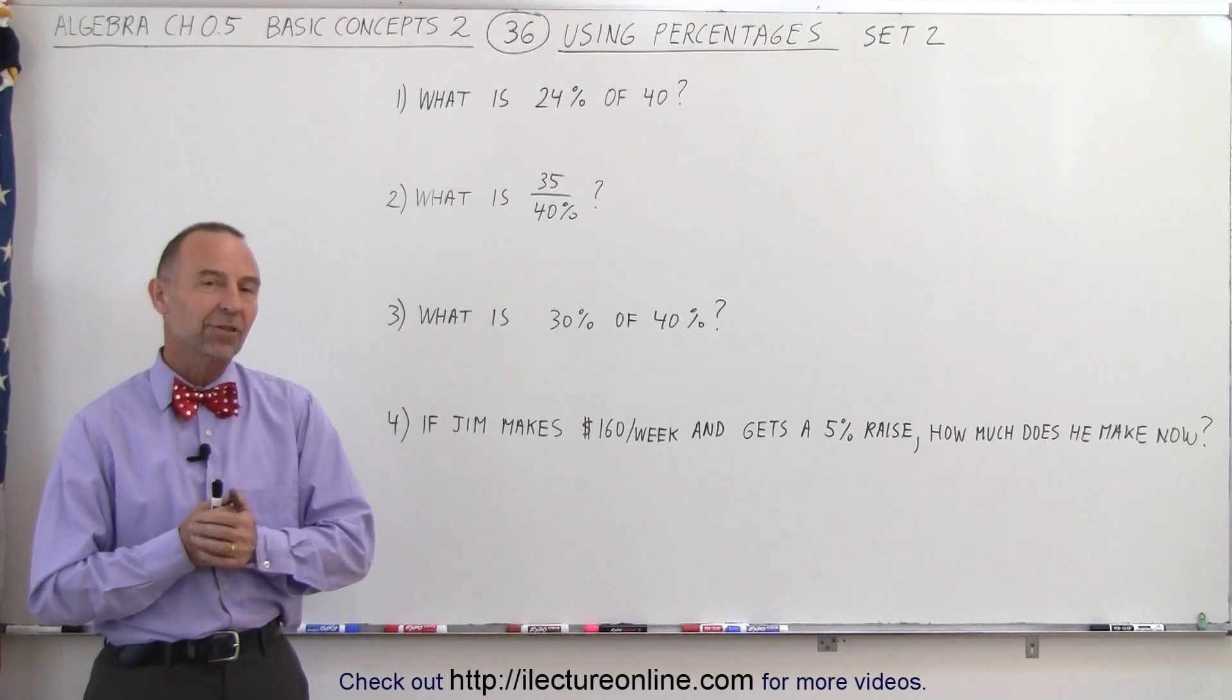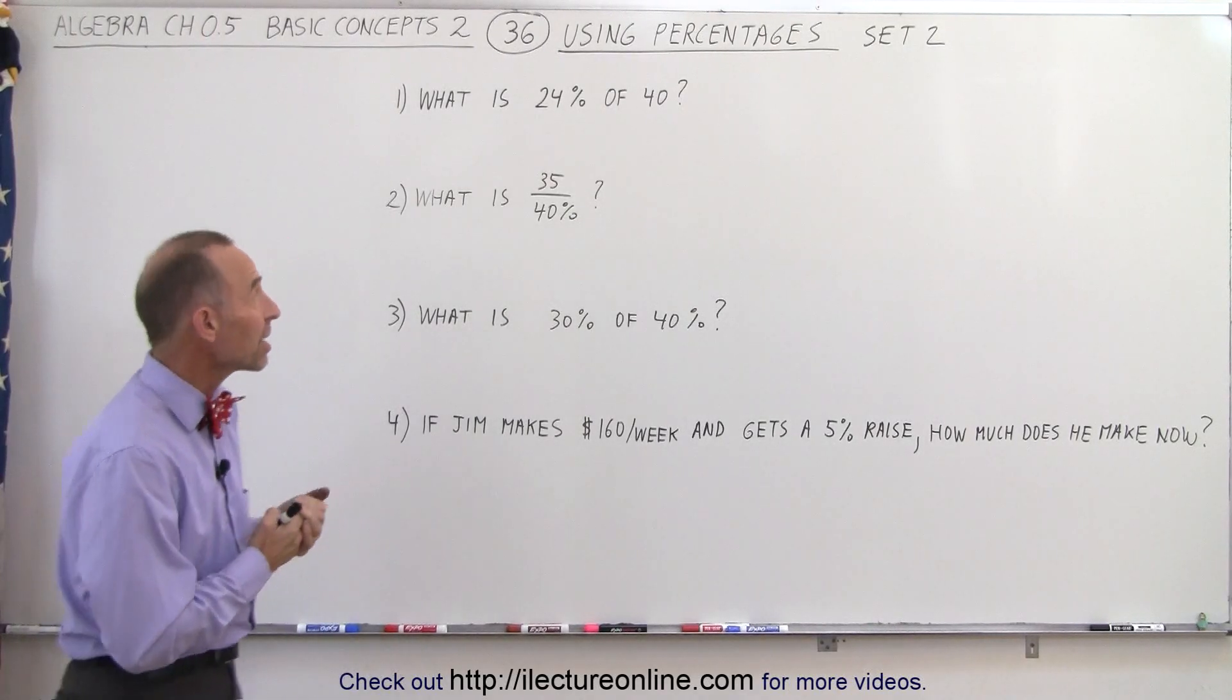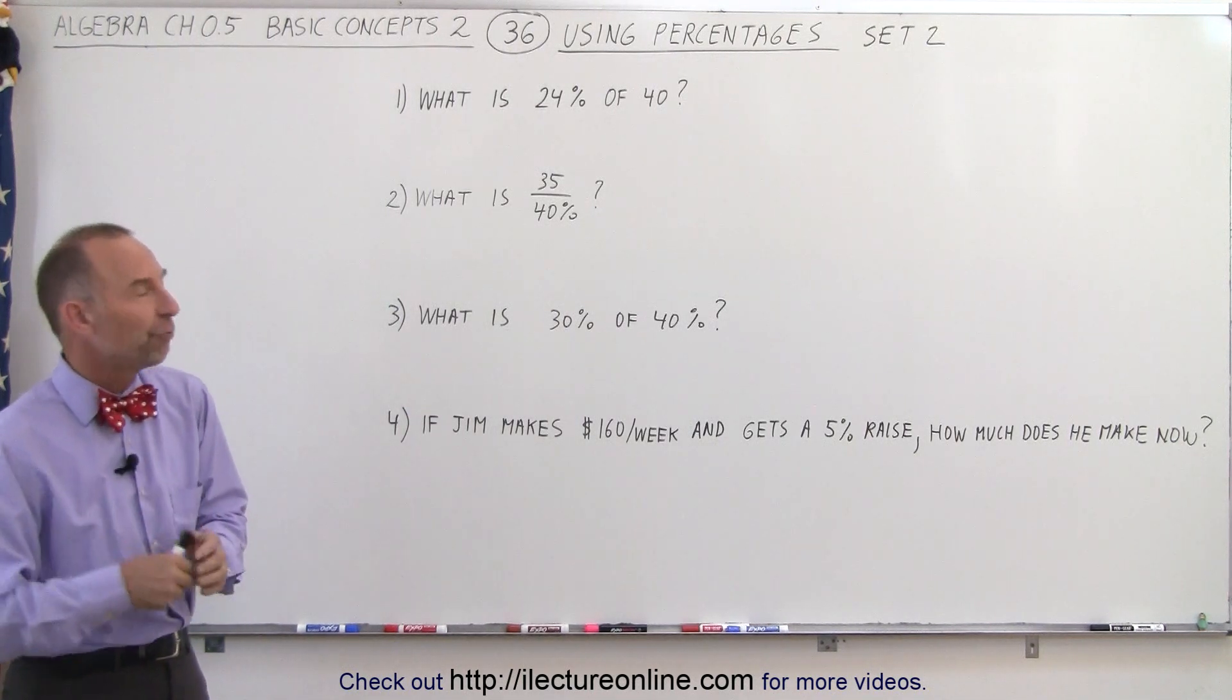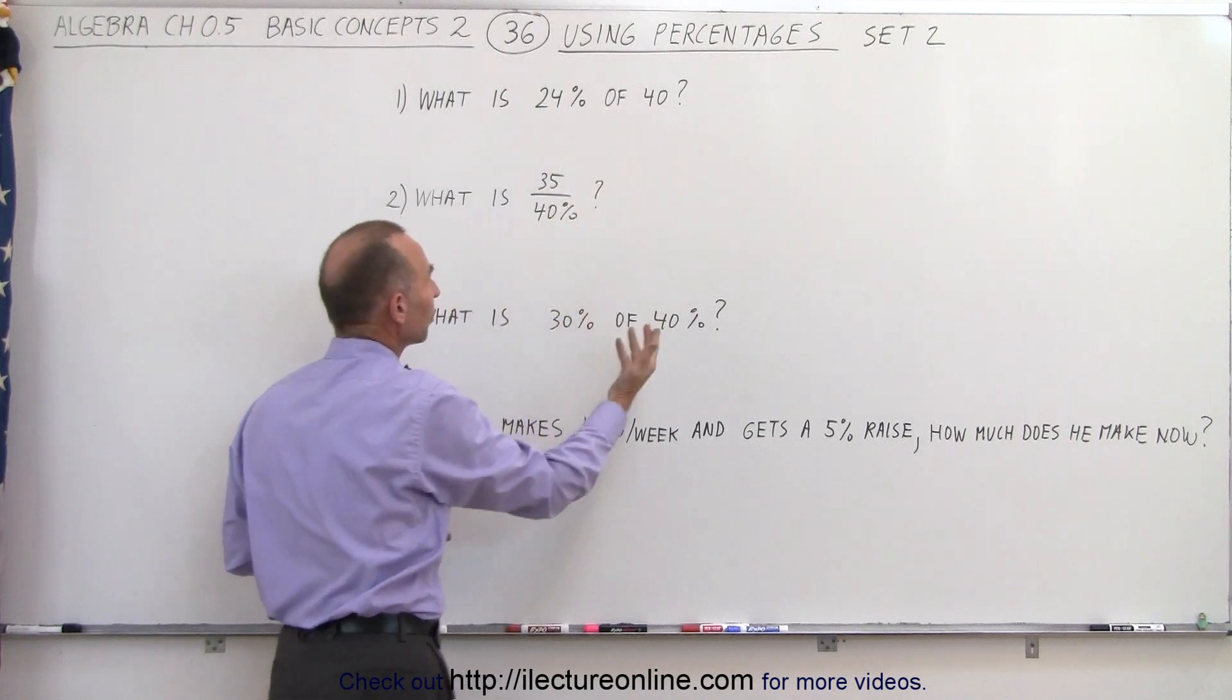Welcome to our lecture online. Now let's try our hand at these examples right here. We're trying to find 24% of 40. When we see the word of, we know we need to multiply.